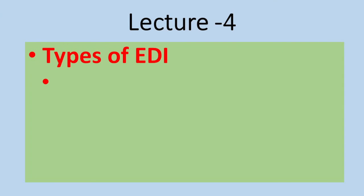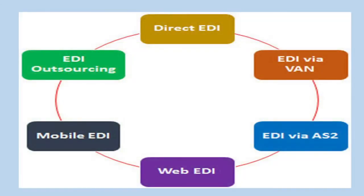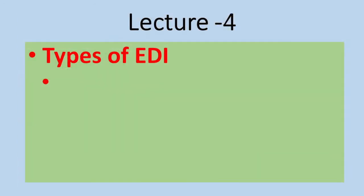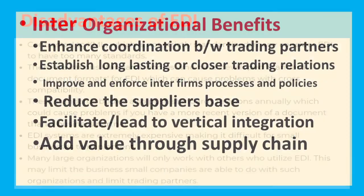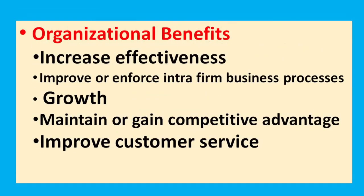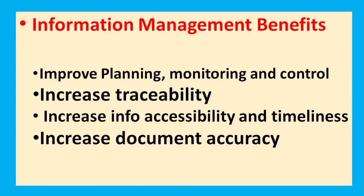In the next unit — lecture 4 — we will discuss types of EDI: Direct EDI, EDI with WAN, EDI via AS2, Web EDI, and Mobile EDI. In summary, what we learned in this video are four things: features, benefits, disadvantages, and limitations. Okay students, bye.